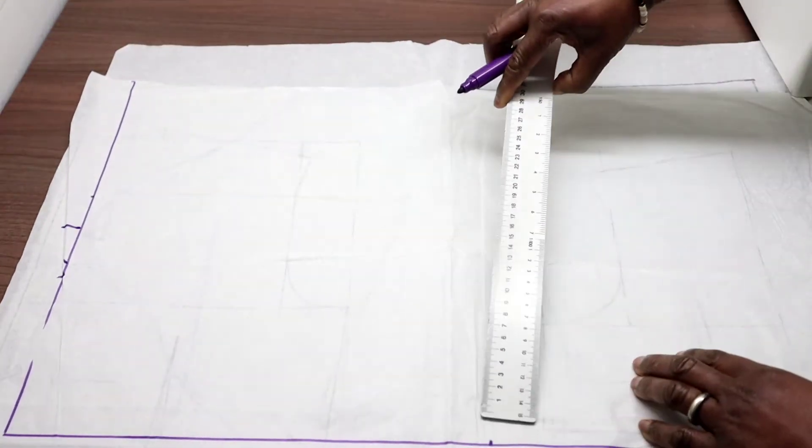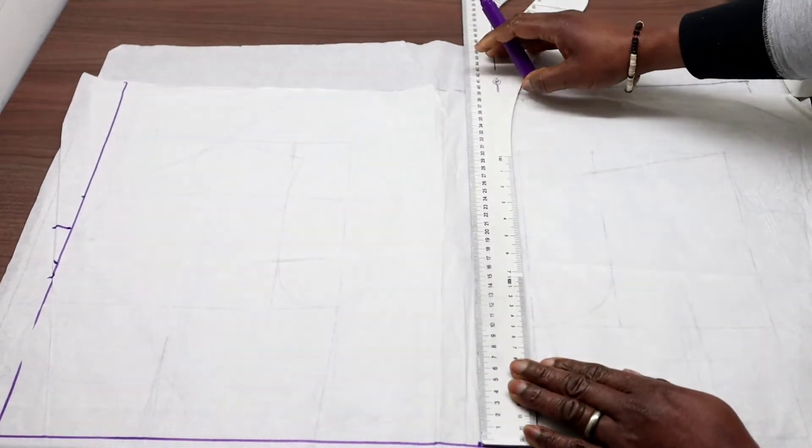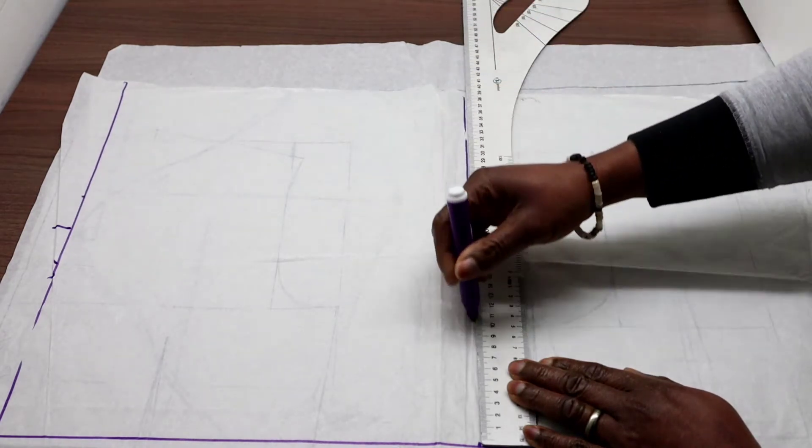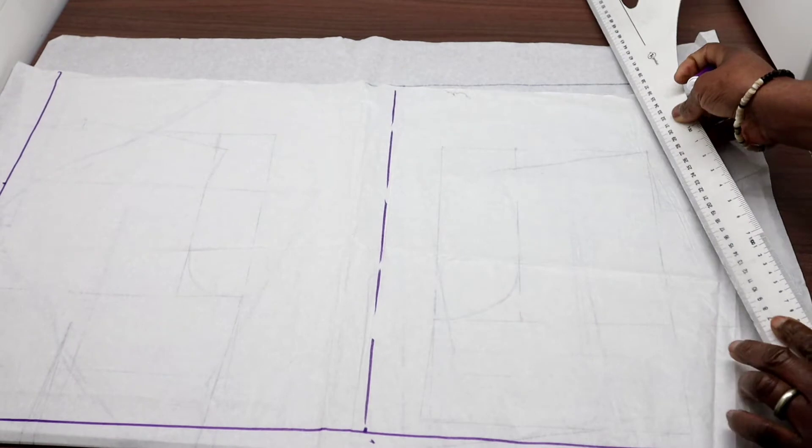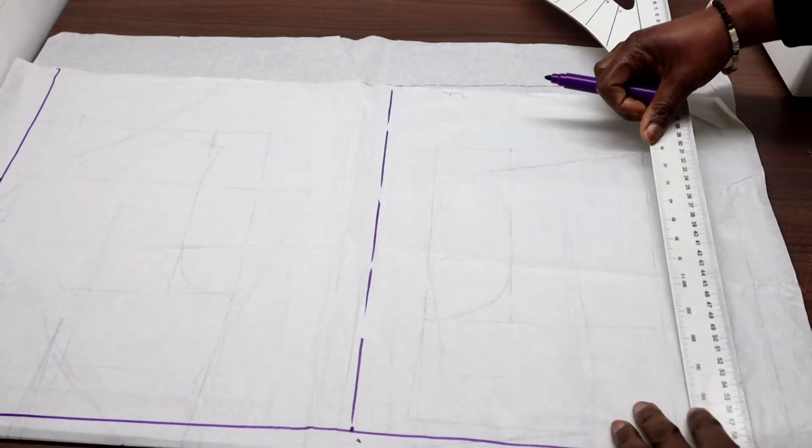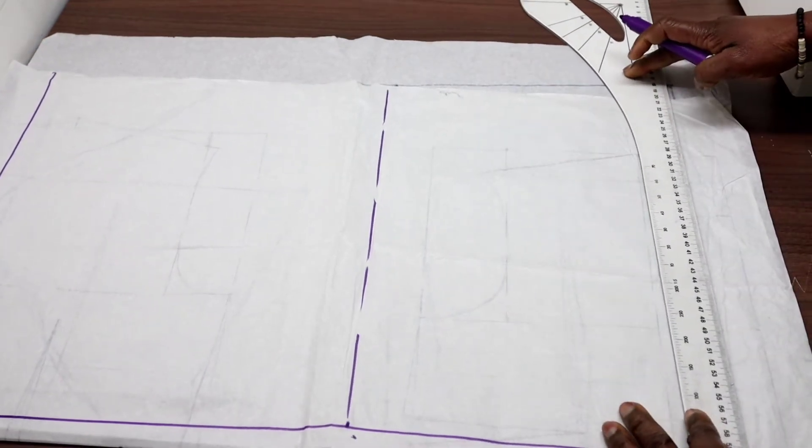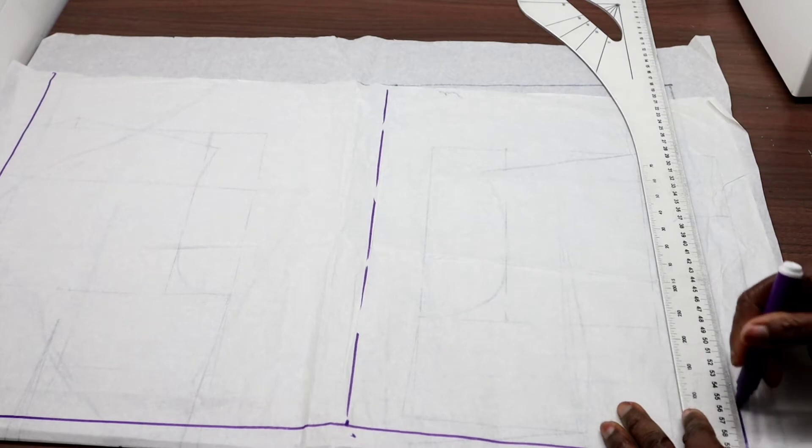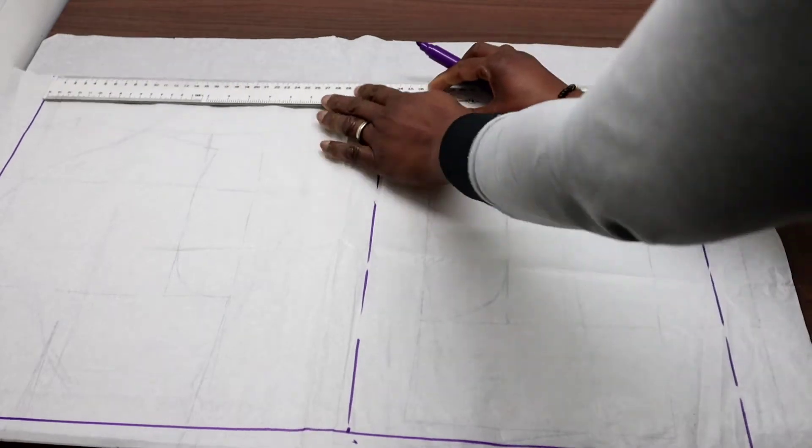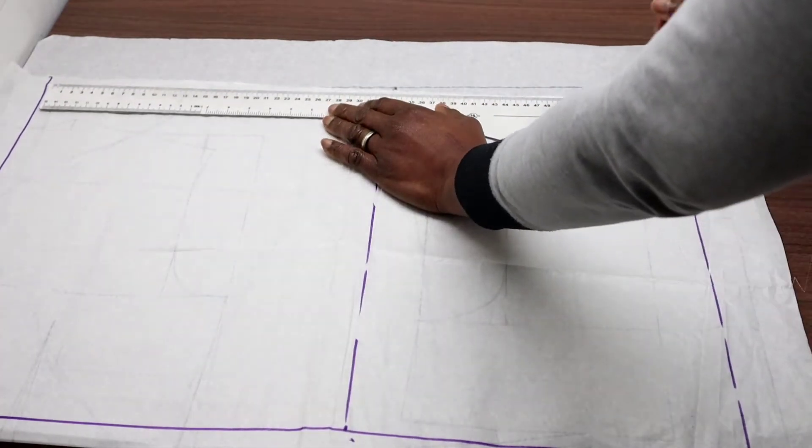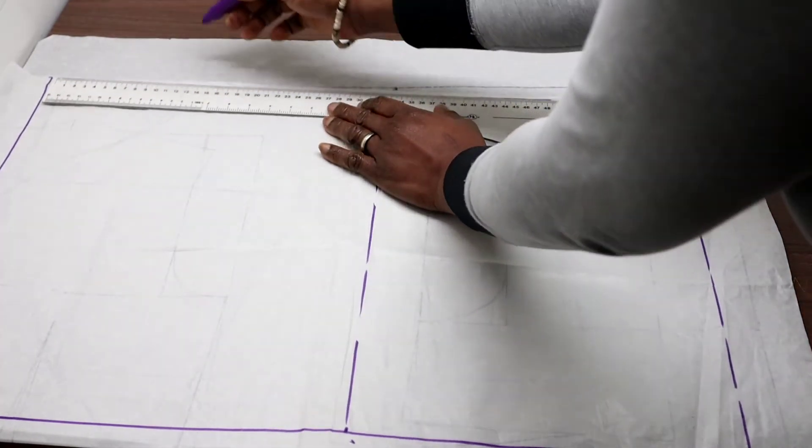So the next is to draw the same line here on the armhole. Then we will close the box with the length of our sleeve, 60 cm.